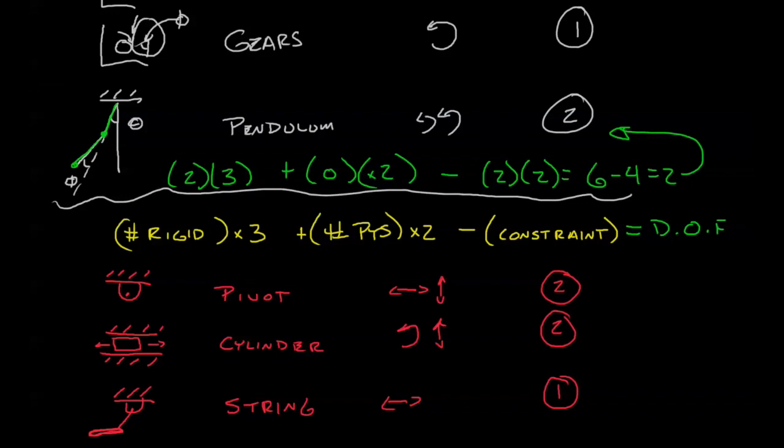Next we can take a look at the gears. First we have two rigid bodies. Once again, no points. And now we're going to subtract our constraints. We have a pivot right here and another pivot, so that's two constraints. But in addition there's a rolling contact here, so that's going to be an additional constraint. Minus three on both of those gears. So we have six minus six equals zero. So there's one degree of freedom, otherwise the thing wouldn't move. Where have we gone wrong?